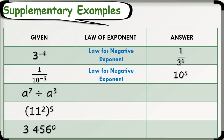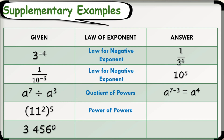Another given: a raised to 7 divided by a cubed. In this example, we will use the quotient of powers. We copy the common base a and subtract the exponents 7 and 3, so we have a raised to 7 minus 3, which is equal to a raised to 4. Let's have the quantity of 11 squared raised to the power of 5. We apply the power of powers, so we have 11 raised to 2 times 5, which is equal to 11 raised to 10. Another one: 3,456 raised to 0. We apply the law for zero exponent, so our answer is equal to 1.